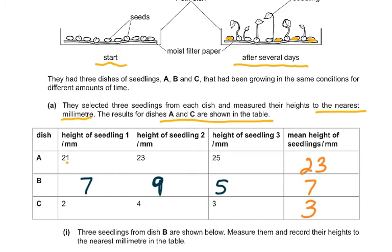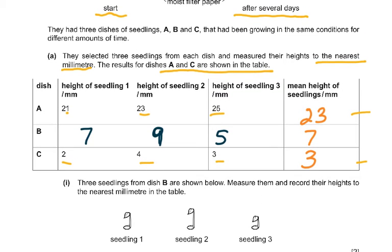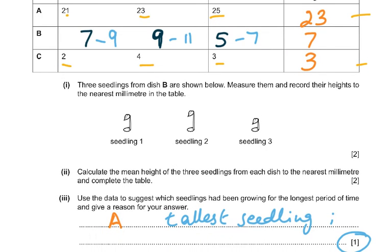A and C was easy. There was 21, 23, 25, so you calculated the average was 23. Here it was 2, 4, 3, and the average was 3. This was the nearest millimeter that we did calculate it. The B part was left out, and the three seedlings from dish B, as shown below, measure them and record their heights. I've taken 7, 9, and 5. They were allowed a little bit, a few millimeters up and down. It was allowed 7 to 9, 9 to 11, and anything from 5 to 7. I've taken just one of those and I found the mean to be 7.